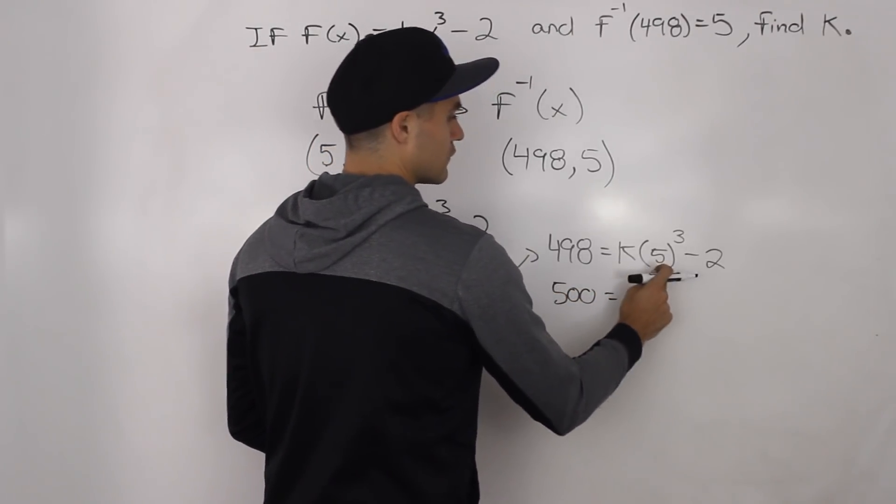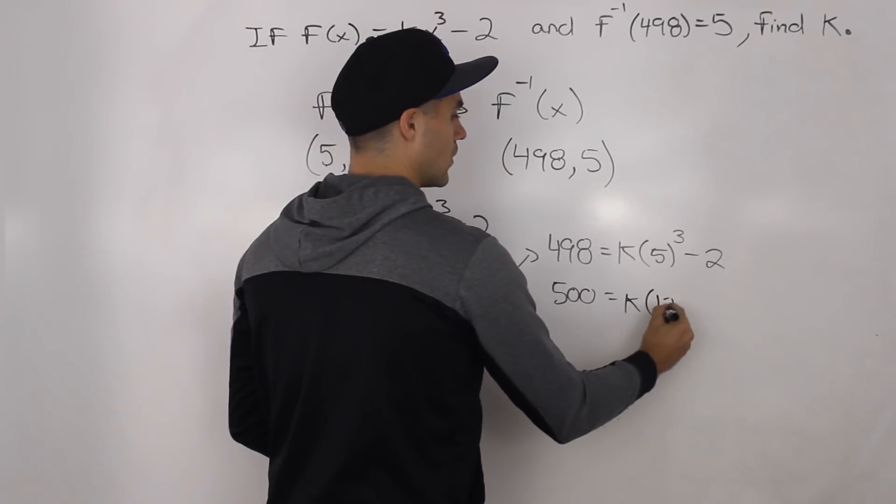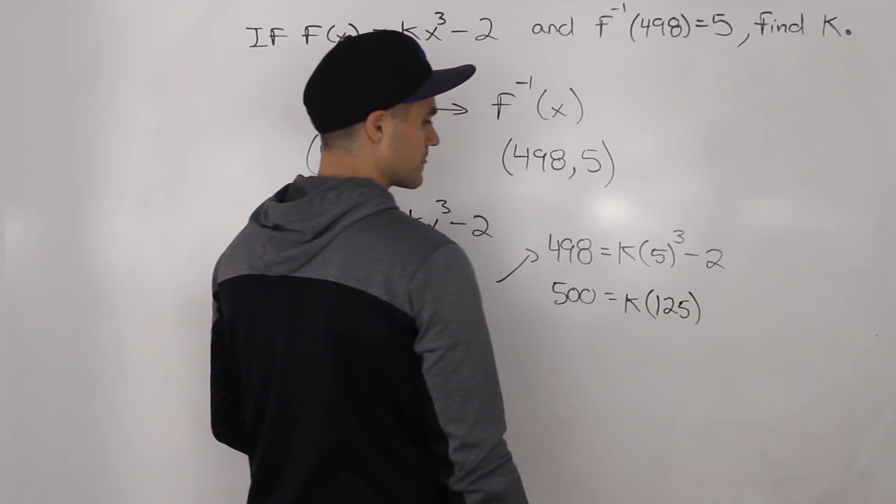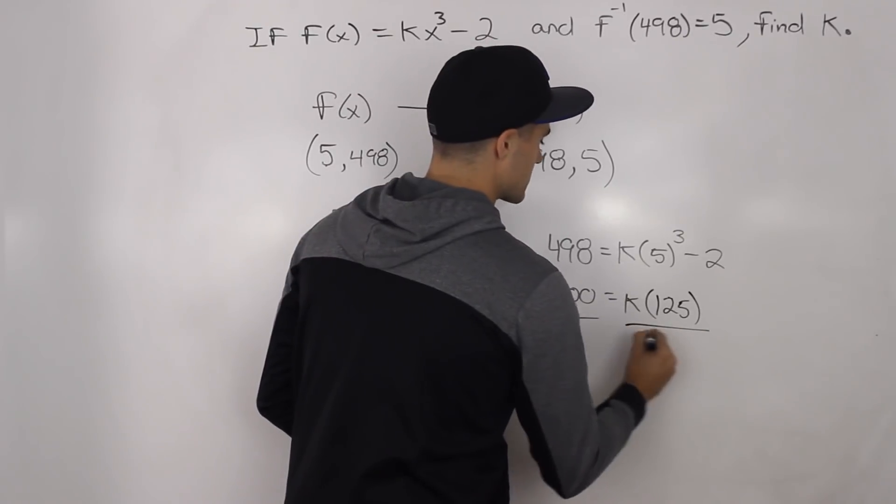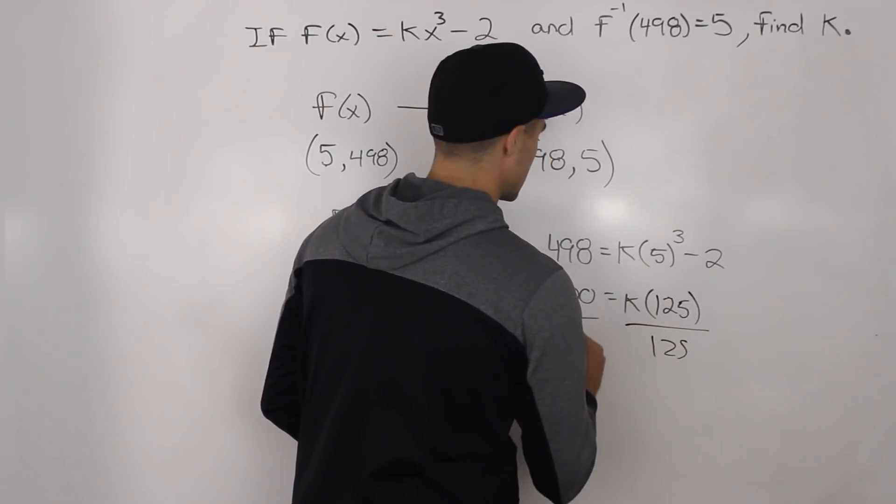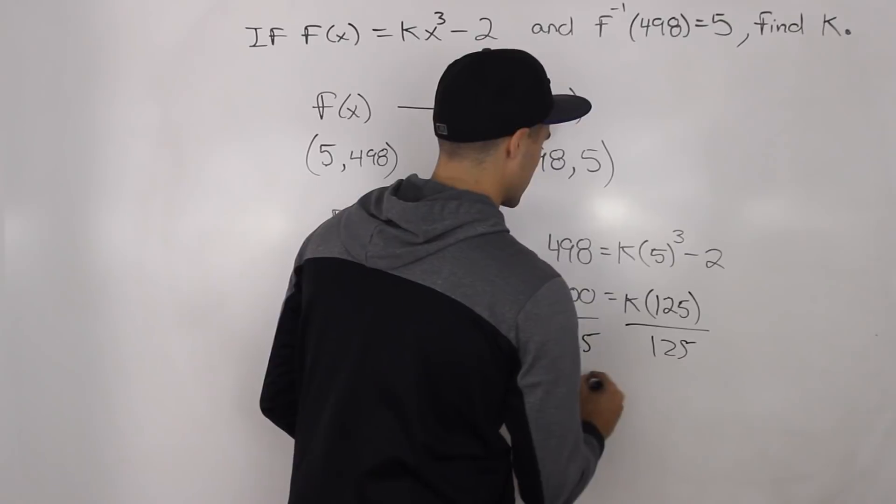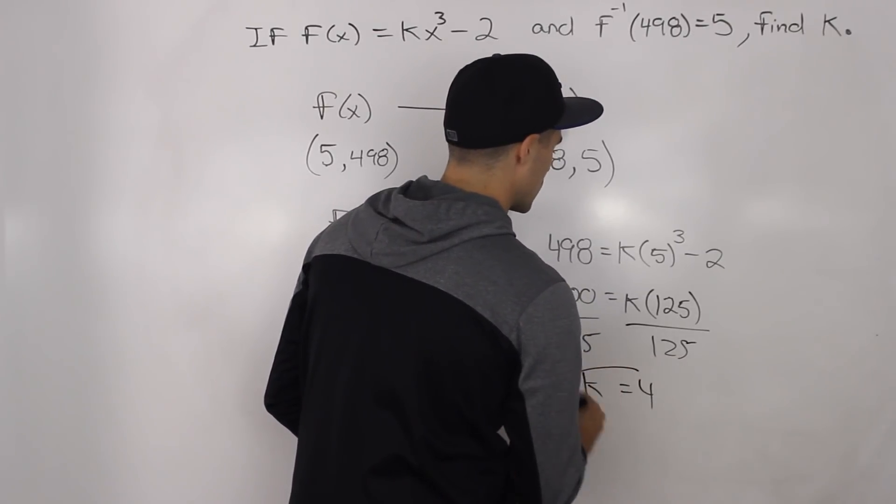So k times 125 equals 500, since 5 to the power of 3 is 125. Then divide both sides by 125 to isolate for that k. We get a k value of 4.